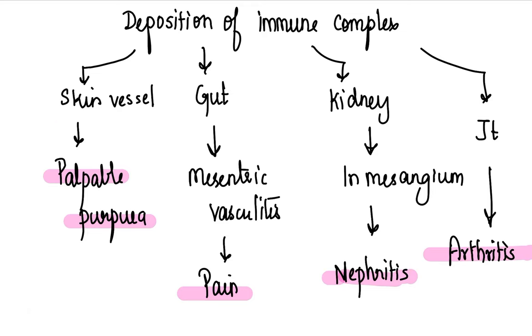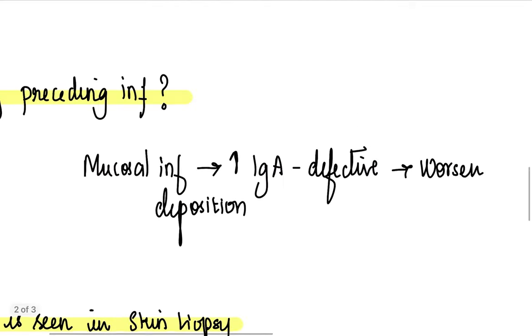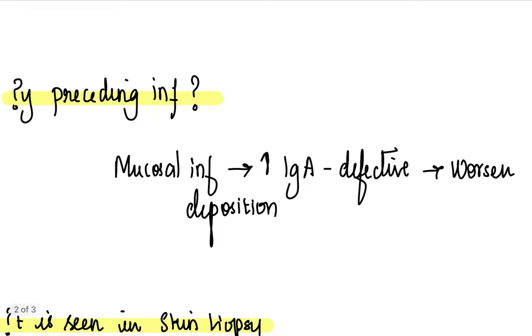When antibody attacks one antigen, what happens? It is going to deposit somewhere as an immune complex. And this deposition happens in skin, that is what is manifested as palpable purpura. If it's going to deposit in gut, it is mesenteric vasculitis, abdominal pain presentation. Renal mesangium, if it is going to deposit, it results in nephritis. Joint is arthritis. Simple.